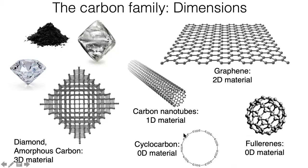We've got another one here — something called cyclocarbon. It's made up of carbon atoms all joined in a ring. There are 18 carbon atoms here, and it's just a flat ring, a flat analogue of this fullerene. You can see alternating single bonds and triple bonds all the way around. This was made by a team in Switzerland just a few months ago — a brand new form of carbon, made with some really clever chemistry. That is a zero-dimensional material because you can't add any more carbon to it once it's formed. It's set.